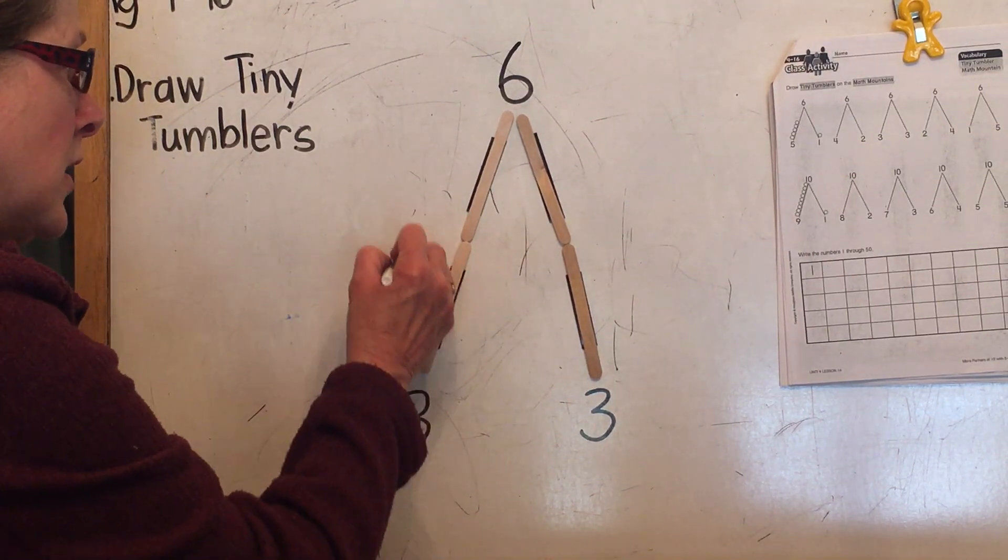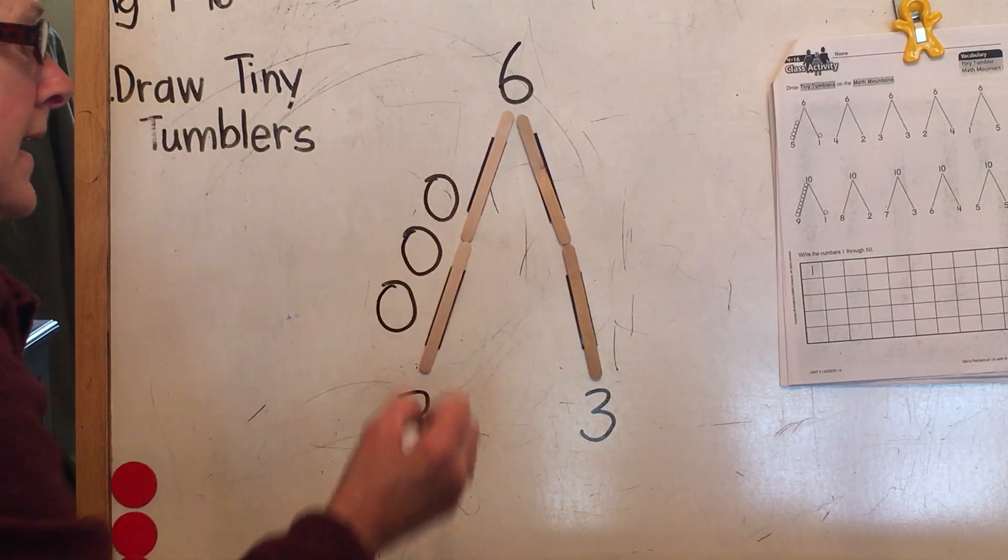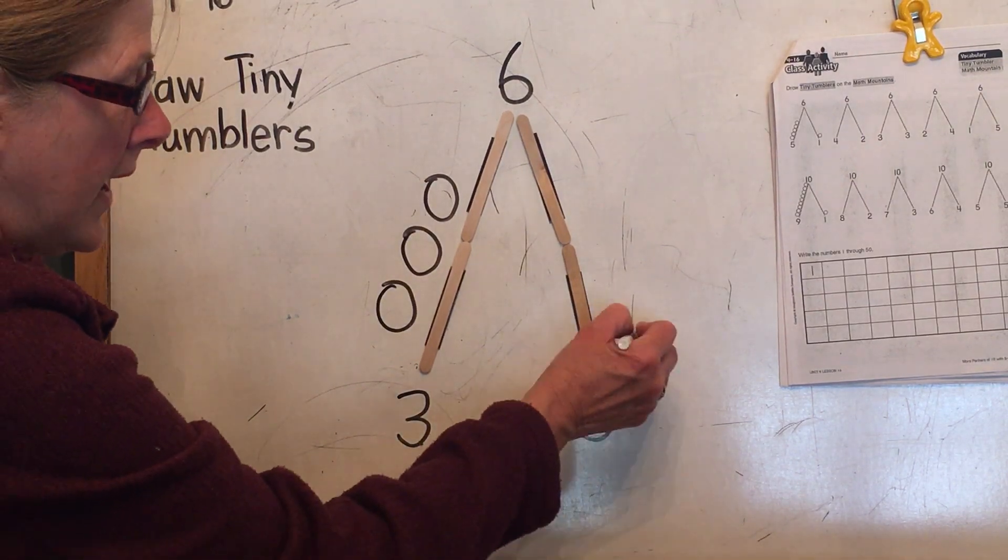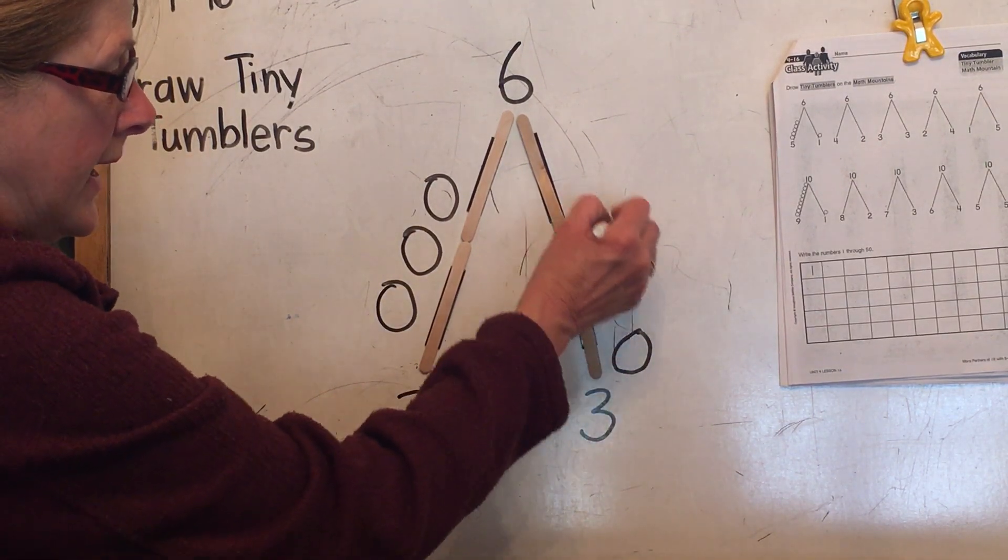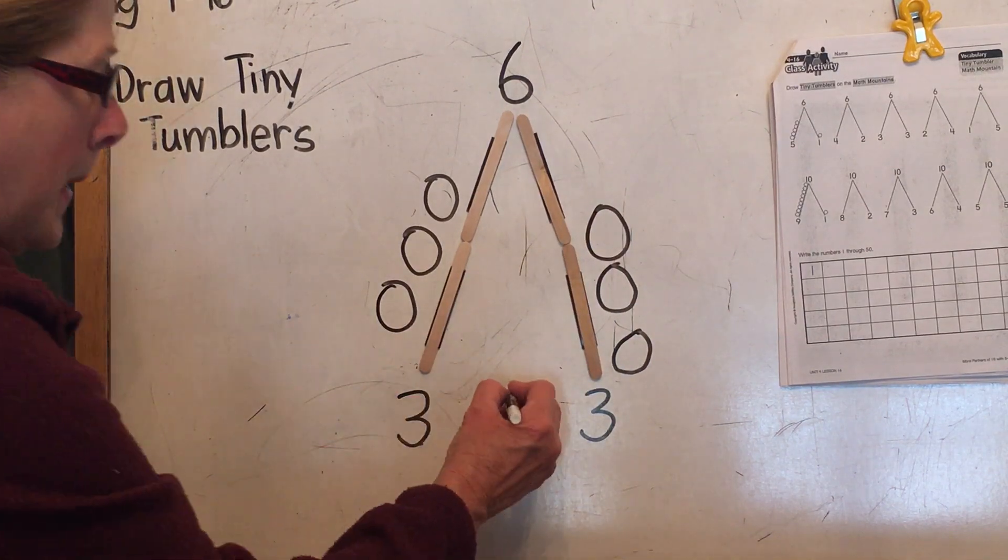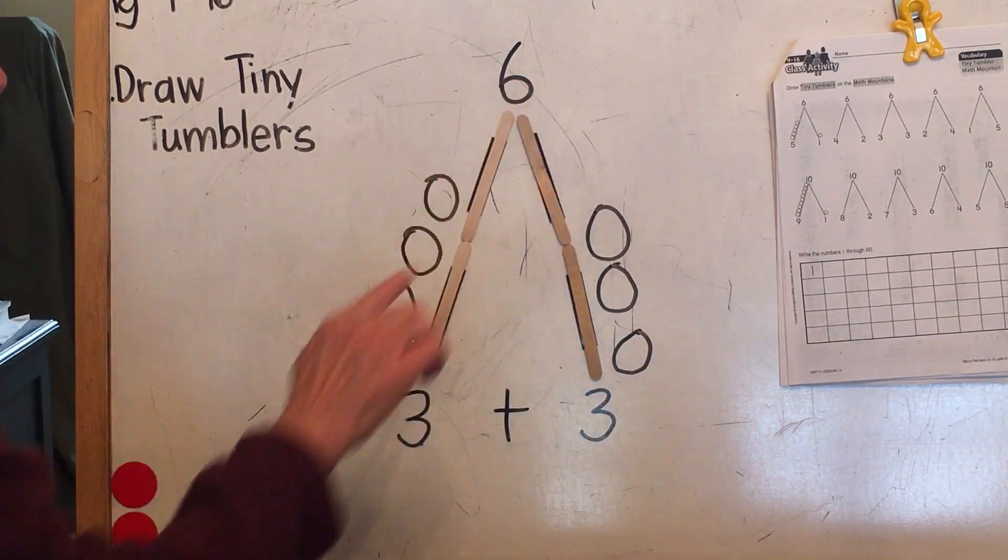So it's one, two, three. And on this side, one, two, three. Notice three plus three equals six.